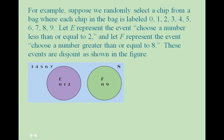For example, suppose we randomly select a chip from a bag where each chip is labeled with the digits 0 through 9. Let E represent the event of choosing a number less than or equal to 2, and let F represent the event of choosing a number greater than or equal to 8. These events are disjoint, as shown in the figure.